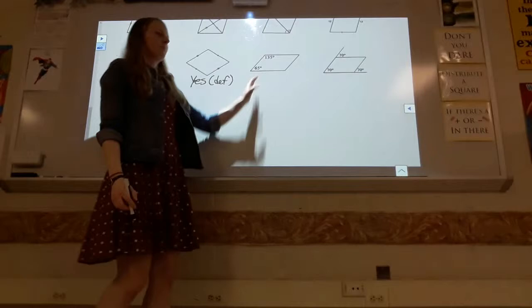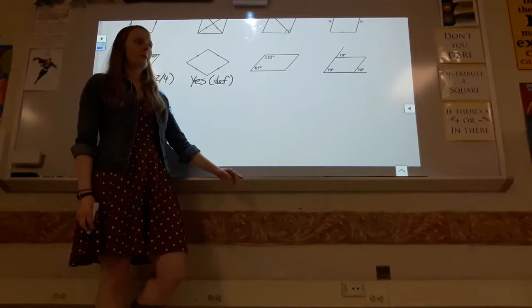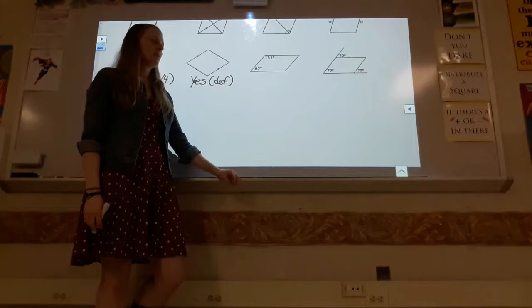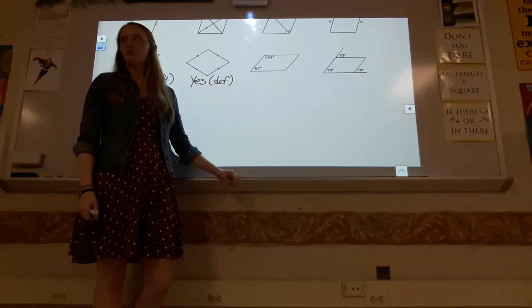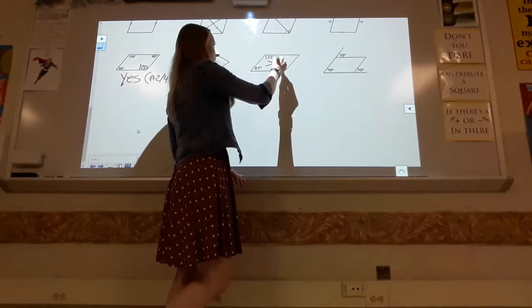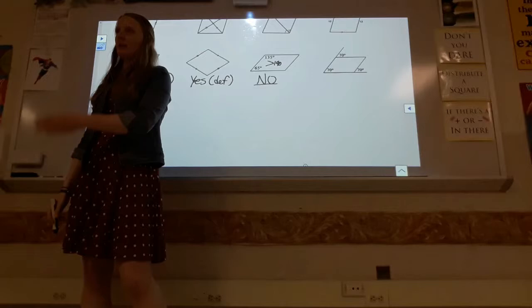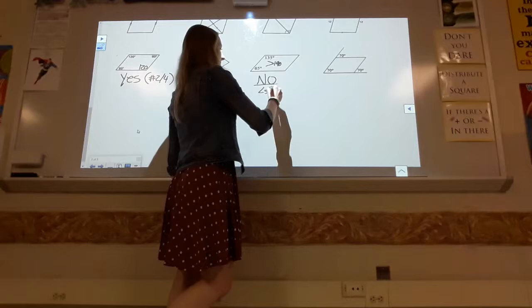The next shape has angles of 35 and 65. When you add them, they're not supplementary. It's not that there's not enough information — the information provided doesn't match a parallelogram. Because consecutive angles are not supplementary, this is not a parallelogram.